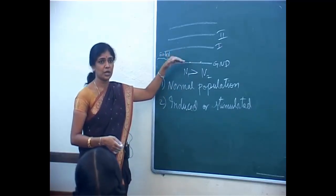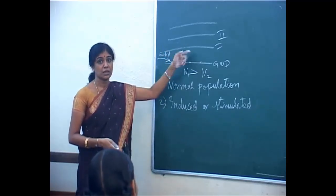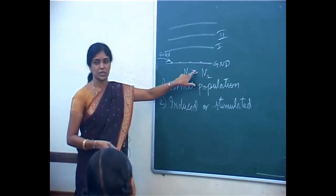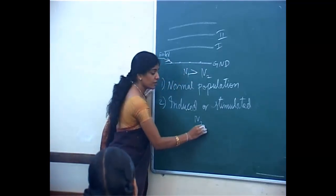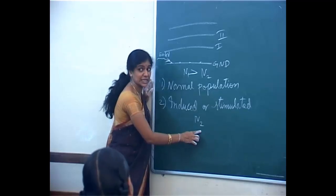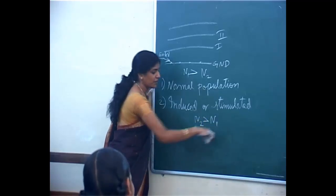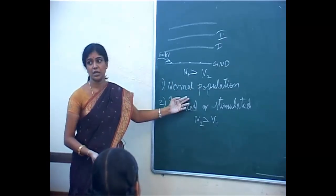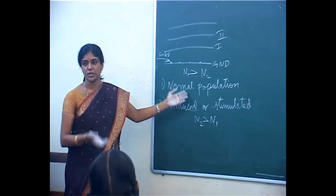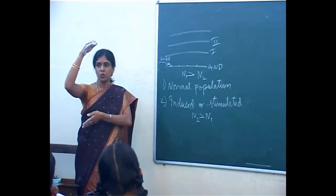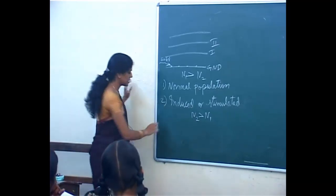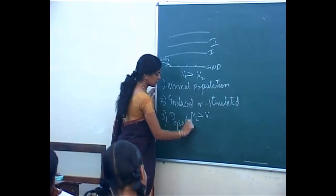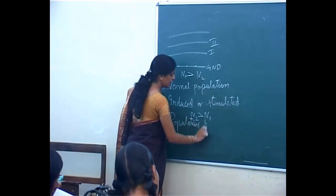When all atoms are moved to the excited state, what happens to the number of atoms in the excited state? They will be more than the number of atoms in the ground state. Initially N1 was greater — that is normal population. Now it is vice versa — N2, the number of atoms in the excited state, will be greater than the number of atoms in the ground state. We call this population inversion.